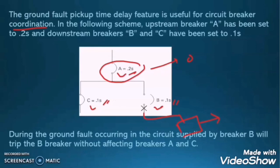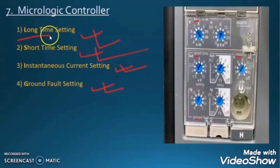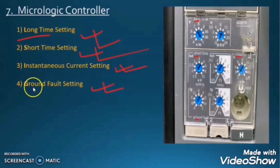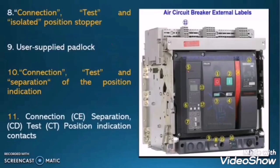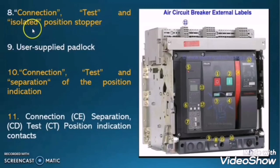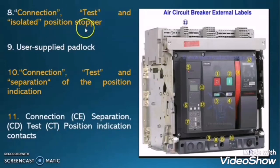I hope you clearly understand the micrologic controller settings — long time setting, short time setting, instantaneous current setting, and ground fault setting. Now let us move to the next detail present on the air circuit breaker: the connection, test, and isolated position stopper.